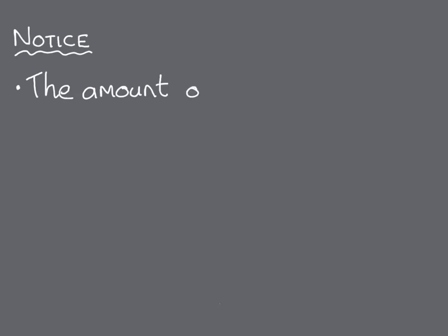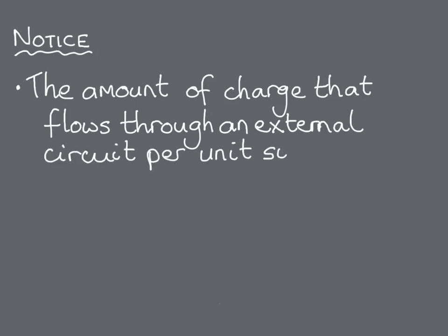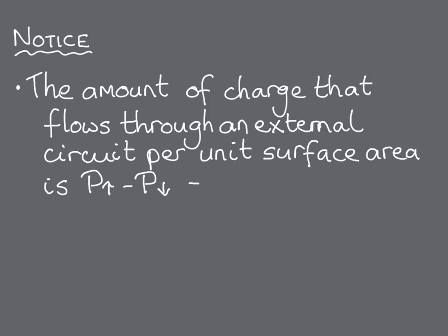Notice that the number of electrons that flow through the external circuit per unit area of the ferroelectric is twice the value of the polarisation. Think of it that p microcoulombs of electrons for every square centimetre of surface have to leave the electrode to get rid of the opposite compensation, and then another p microcoulombs per centimetre squared have to leave to make the compensating holes.